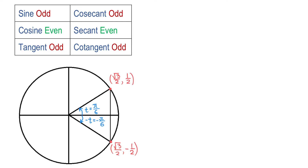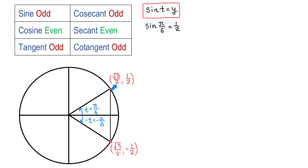We know that by definition sine of t equals y. Then sine of pi over 6 is 1 half. Recall that on any point on the unit circle, the first coordinate represents cosine and the second coordinate represents sine. So sine of pi over 6 equals 1 half.